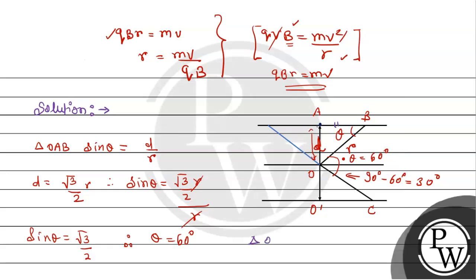This triangle O-dash-C is essentially a mirror image of the other triangle. Therefore we say that O-dash-C equals d at 30 degrees. We use this mirror image relationship to calculate the required value.